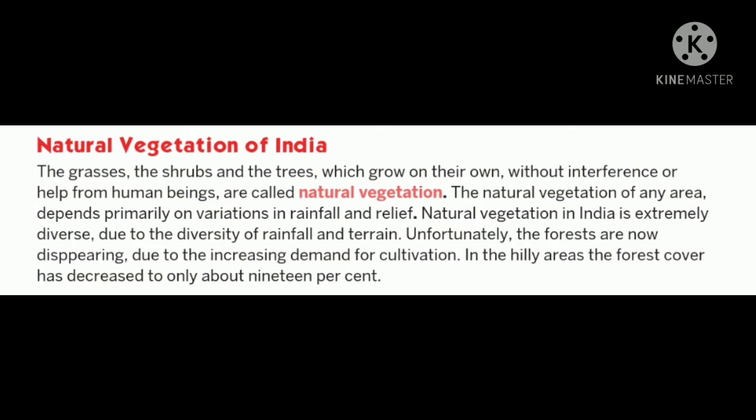According to the climate, now we will find different types of vegetation in India in different regions. The grasses, the shrubs and the trees which grow on their own without interference or help from human beings are called natural vegetation.